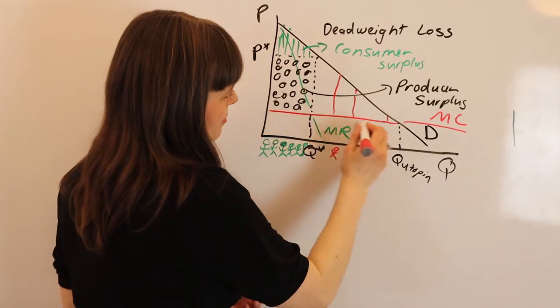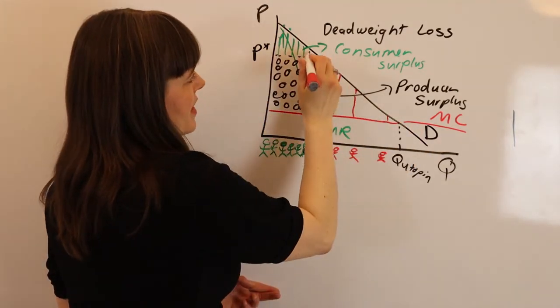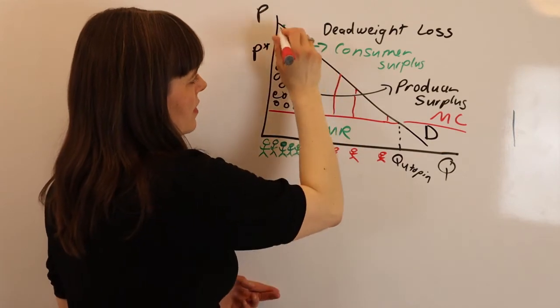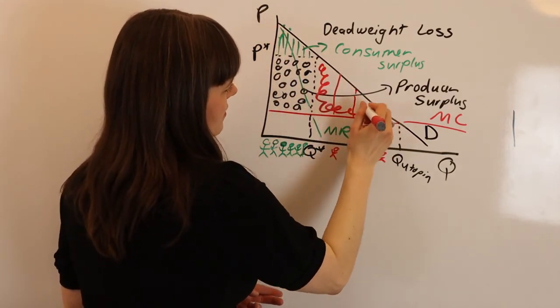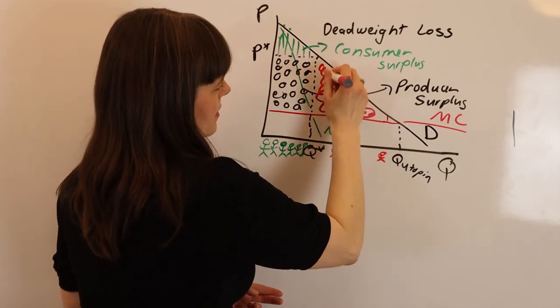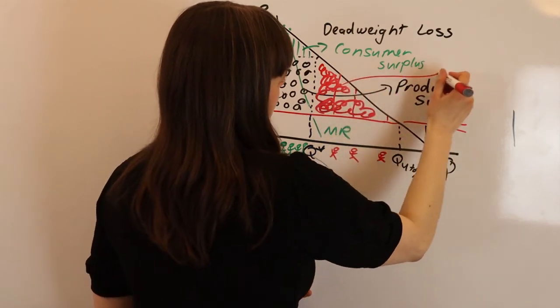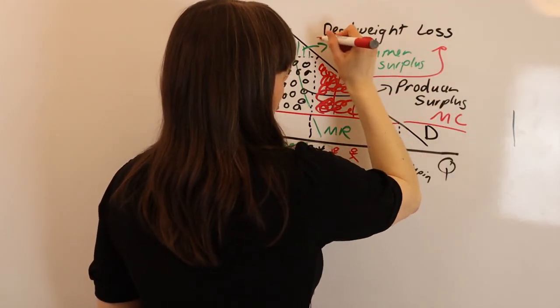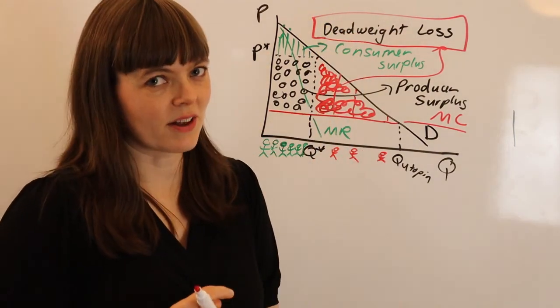When we compare the total surplus in the utopian world with the total surplus in the monopoly world, the difference between those is the deadweight loss from the existence of the monopoly. So that red is the deadweight loss - that's deadweight loss in the monopoly.